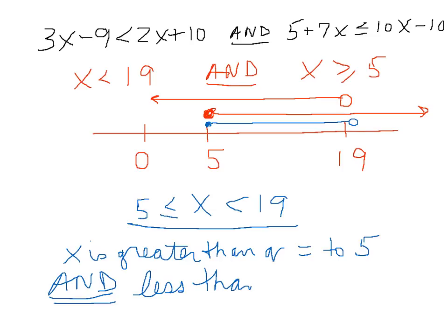Another way of thinking about that is that x is between 5 and 19. It can equal 5, it can't equal 19. Okay?